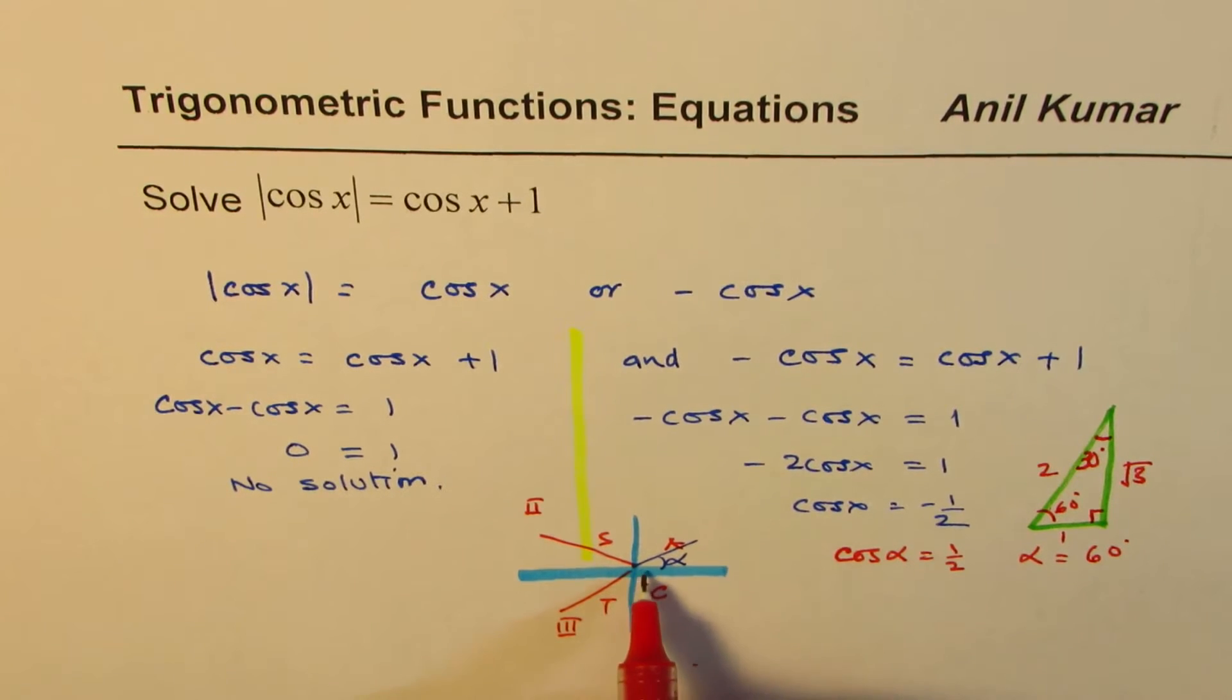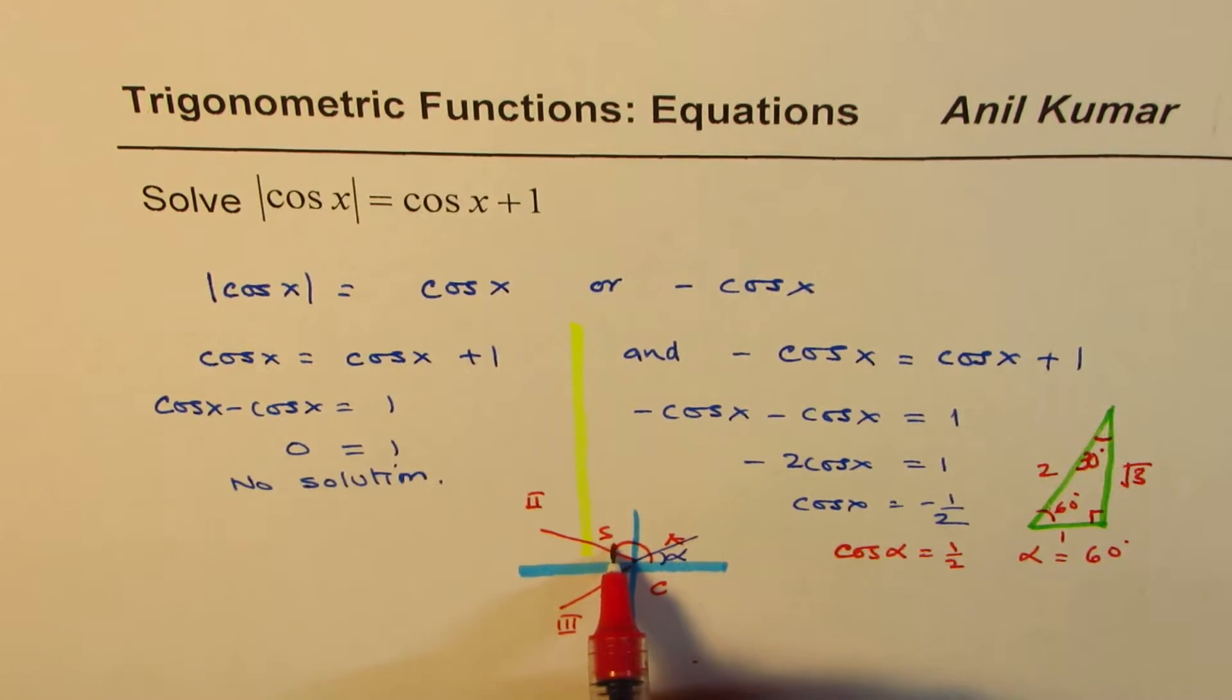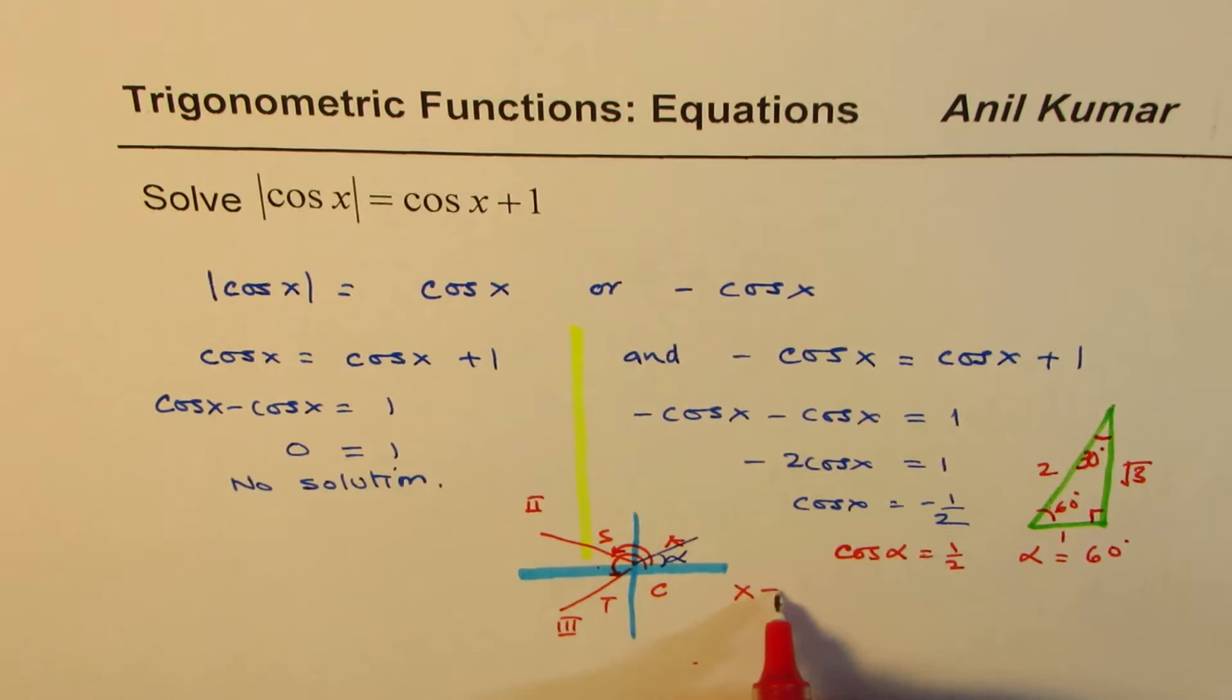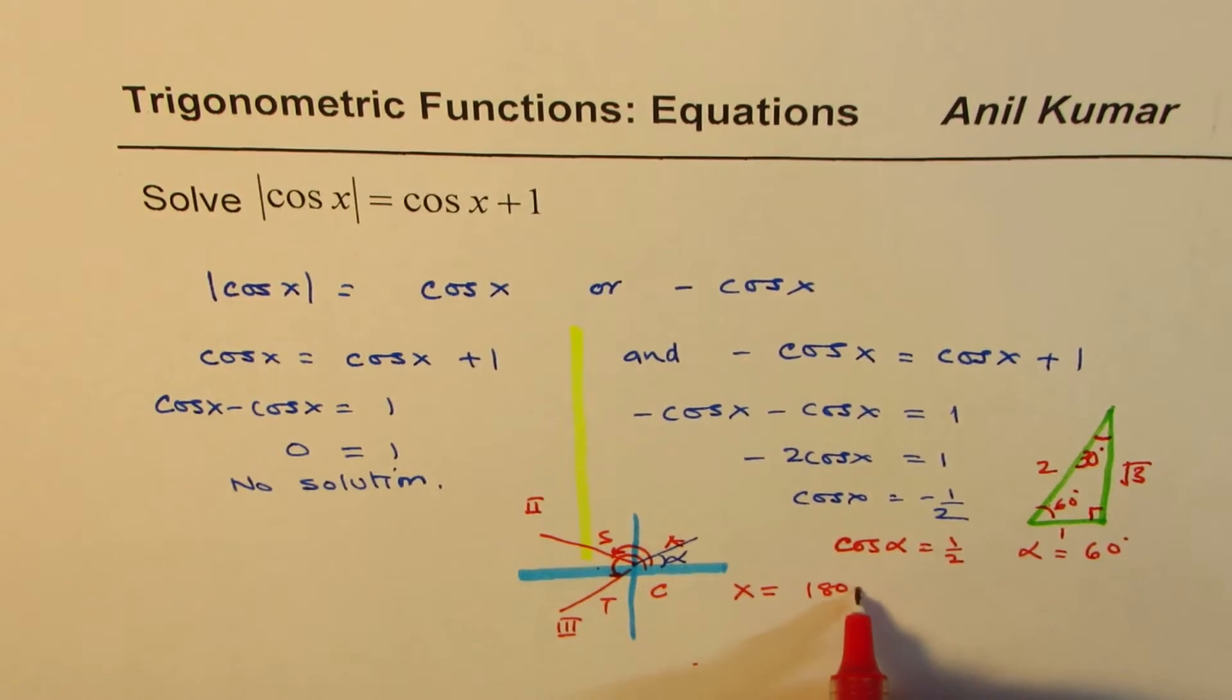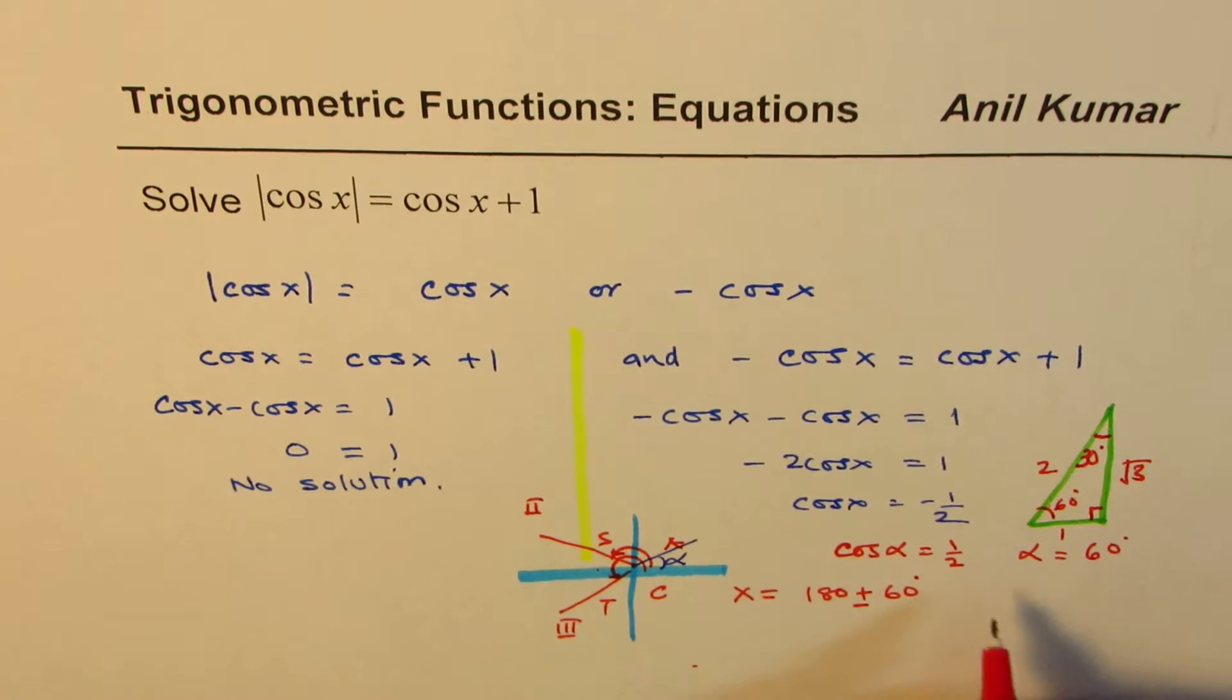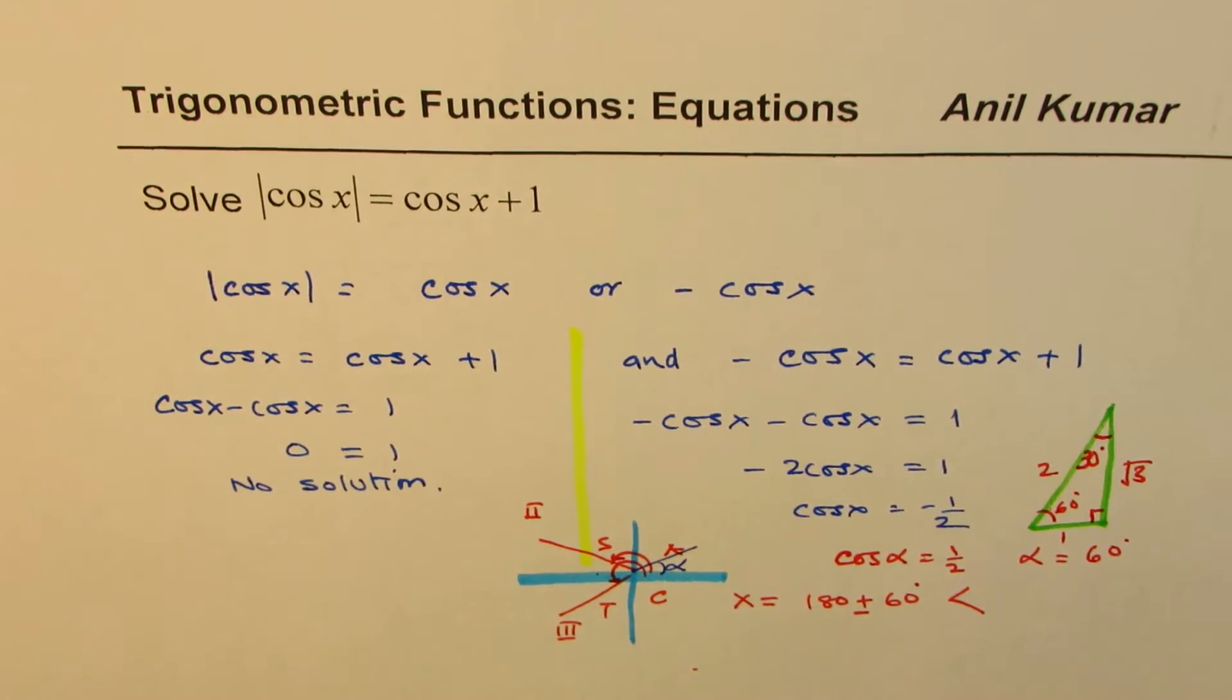Therefore, these two possible solutions could be 180 minus 60 and 180 plus 60. We can write x as equals to 180 plus 60 degrees and 180 minus 60 degrees. So we have two possible solutions.